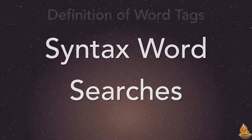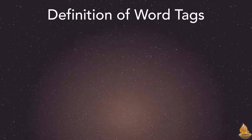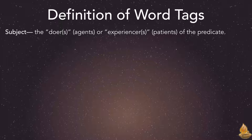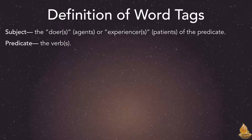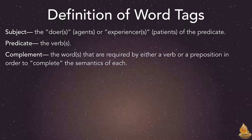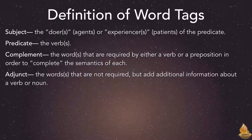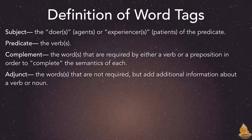Syntax word searches. There are 13 different syntactical tags attached to words. Subject — the doer, agent, or experiencer of the predicate. Predicate — the verb. Complement — the word or words required by a verb or preposition to complete the semantics of each. Adjunct — the word or words that are not required, but add additional information about a noun or verb. Both complement and adjunct are wider than the English classification system of direct objects and indirect objects. Although these categories can be used to search for them, these databases do not tag words using those particular designations.